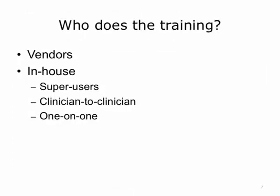Who does the training for an electronic health record implementation? You may assume that vendors have all the training materials and can come in and just provide the training. Sometimes this works, but it's also important to have in-house trainers. There are super-users — clinicians or staff given extra training so they can help other people on the clinical floor use the system. Clinicians can also train other clinicians, as they are familiar with the clinical procedures and workflow. One-on-one and small group trainings can be provided by a professional trainer.